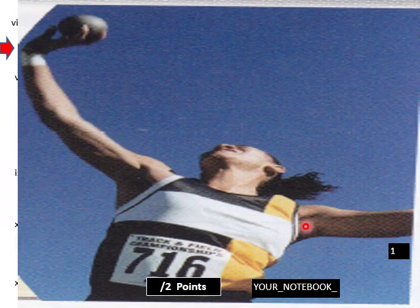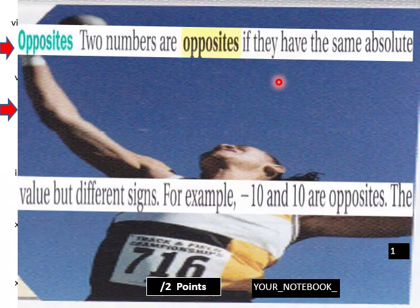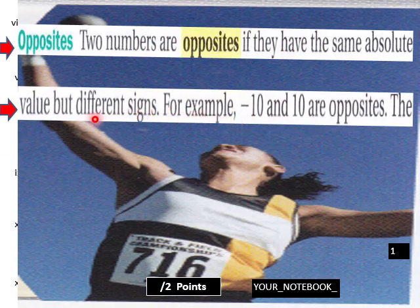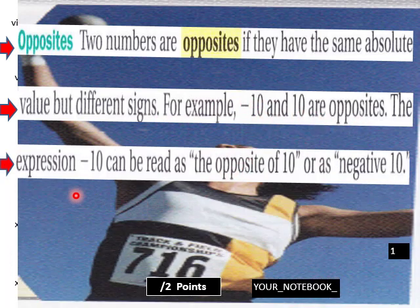Let's go right into page 1 of 1.4 part 2: Opposites. This goes in your notebook. Opposites: two numbers are opposites if they have the same absolute value but different signs. For example, negative 10 and 10 are opposites.